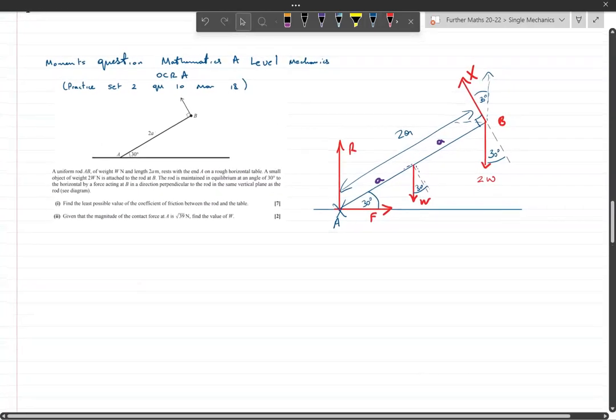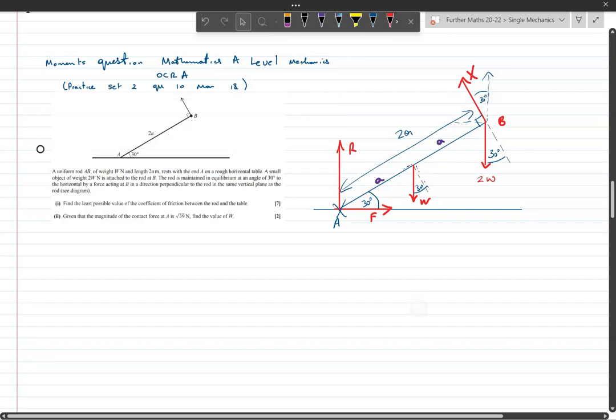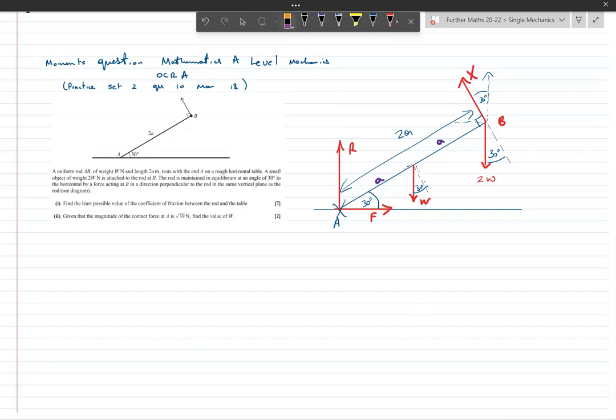I've drawn the diagram separately before doing the video. A good diagram is quite important here. We have a situation where it tells us it's a uniform rod, so therefore the weight is in the middle or the center of mass of the rod is in the middle, so we can replace it with a single weight in the middle.